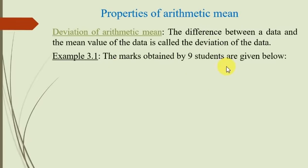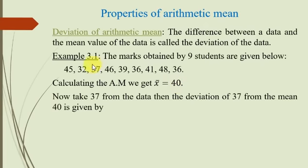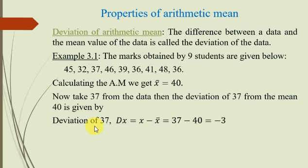For example, the marks obtained by nine students are given below. یہ example ہم نے پہلے بھی کیا تھا۔ Data: 45, 32, 37, 46... سب سے پہلے ہم اس کا mean calculate کریں گے۔ Arithmetic mean x̄ = 40. Now we will find the deviation of a data point from this data. Take 37 from the data. The deviation is represented by dx, and dx = x minus x̄, where x is the data and x̄ is the arithmetic mean. تو x کی جگہ 37 put کریں گے اور x̄ کی جگہ 40.